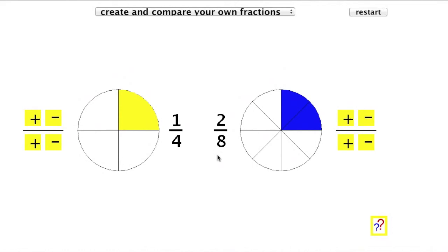When two fractions are the same size but are composed of different numbers, they're called equivalent fractions. Now I'll try and create another pair of equivalent fractions. Here's two thirds on the left, and I'll set the denominator of the fraction on the right to, say, sixths.